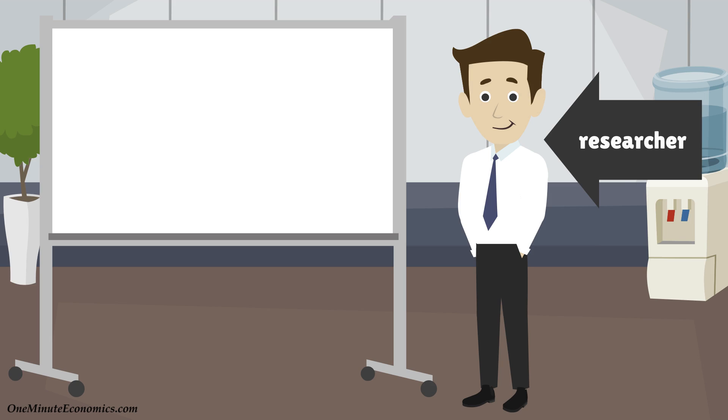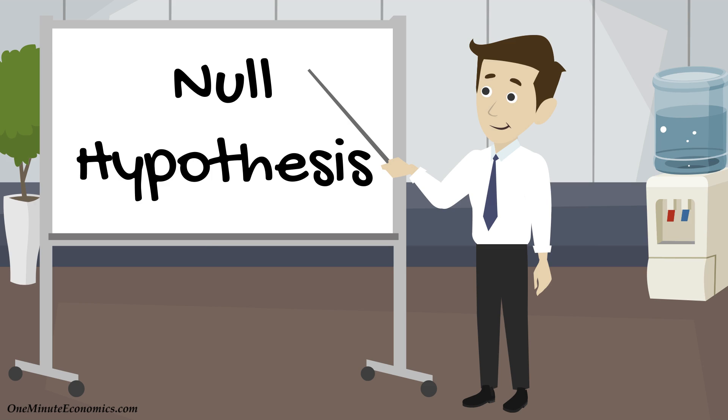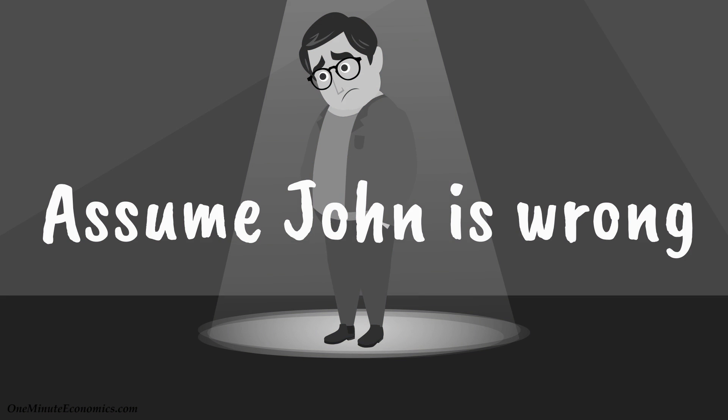A researcher who wants to determine if John is right or wrong starts with a so-called null hypothesis, which states that no, there is no relationship between the technique you use and how often you roll a 6. In other words, you start by assuming that John is wrong.